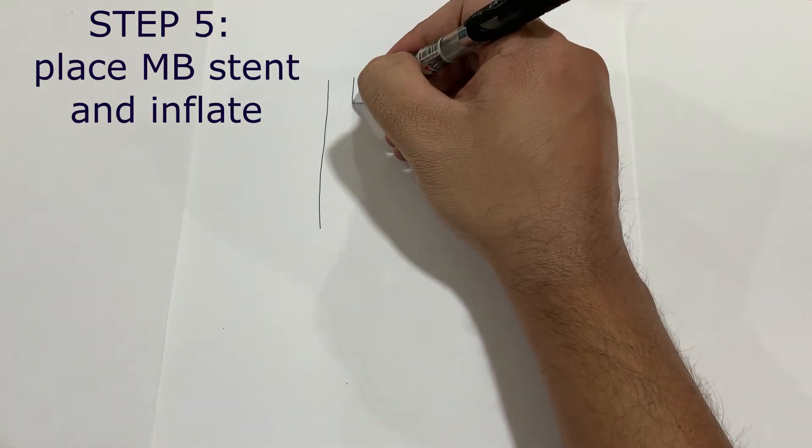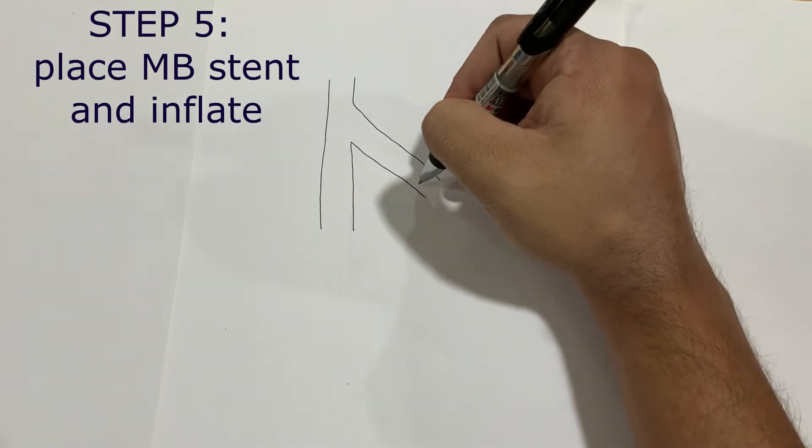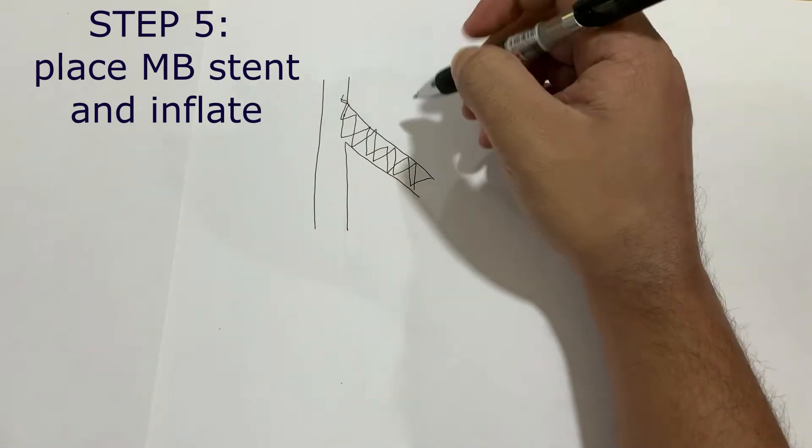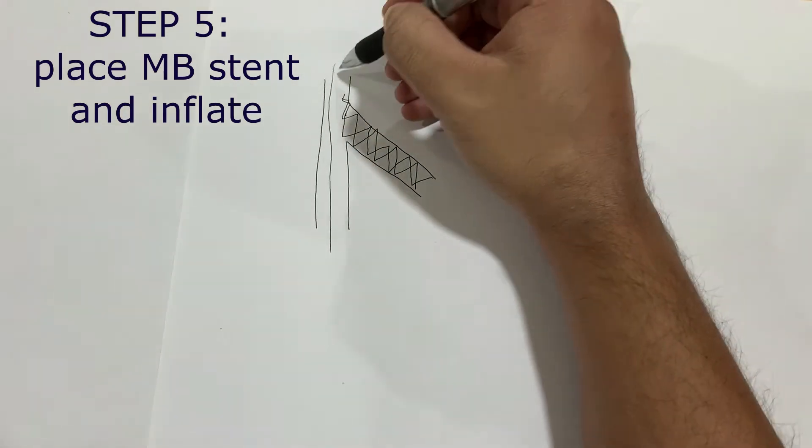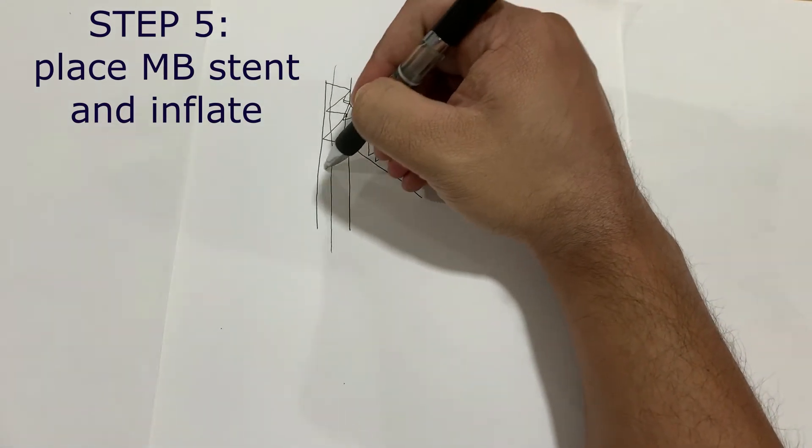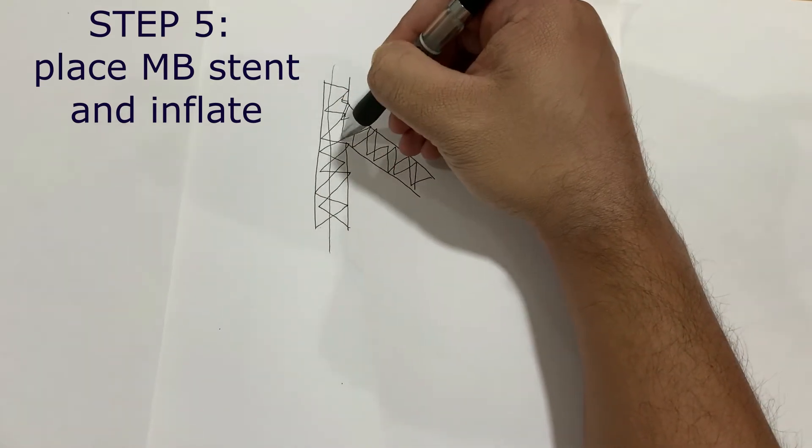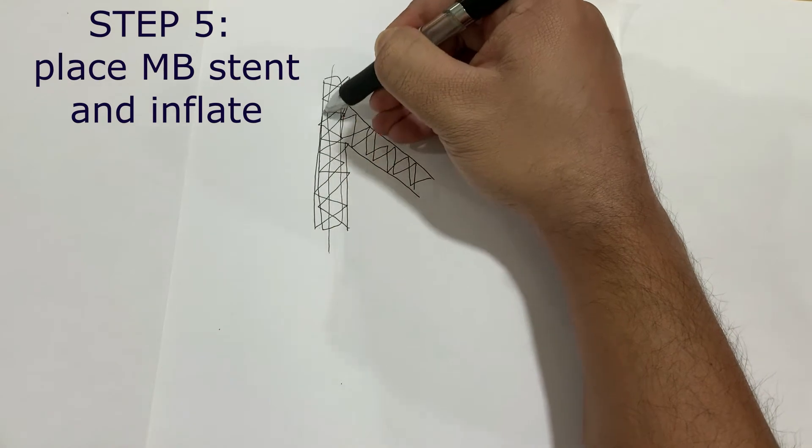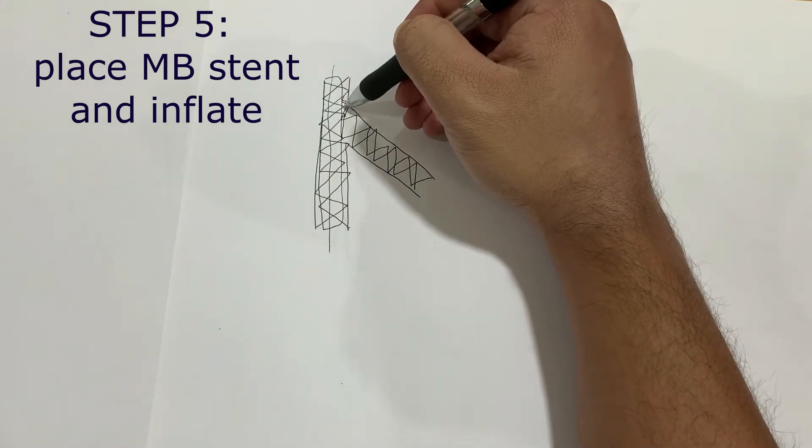Then after crushing the side branch, bring the stent on the main branch and inflate this stent. Once this is inflated, this side will be crushed and there will be a carina that will be created.